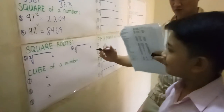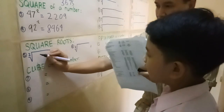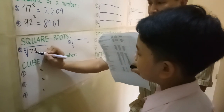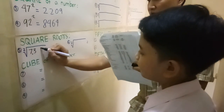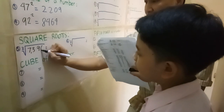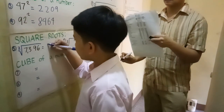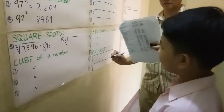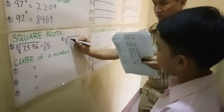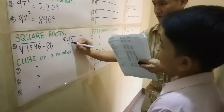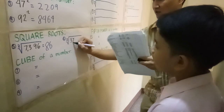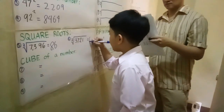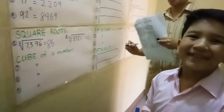We proceed to square roots, Josh. What's the square root of 7,396? 86. Good job. Correct. What's the square root of number 6 — 3,721? 61. Good.